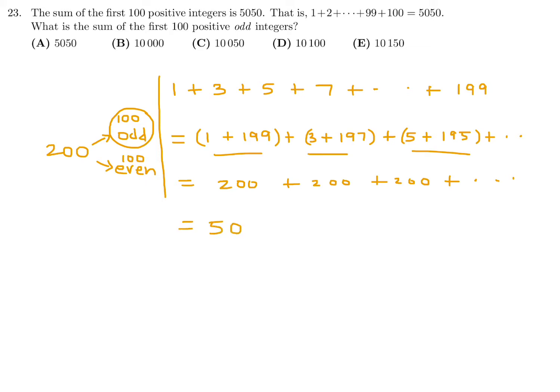So 50 times 200, since there's 200 of them. Sorry, there's 50 of them, and each of them equals 200. So 50 times 200 is 10,000.